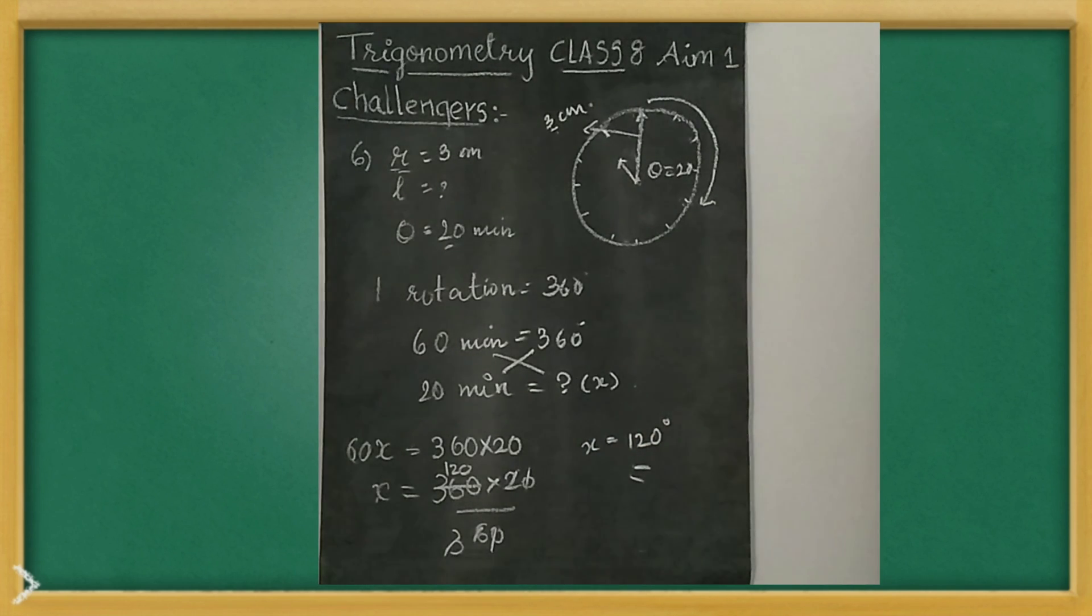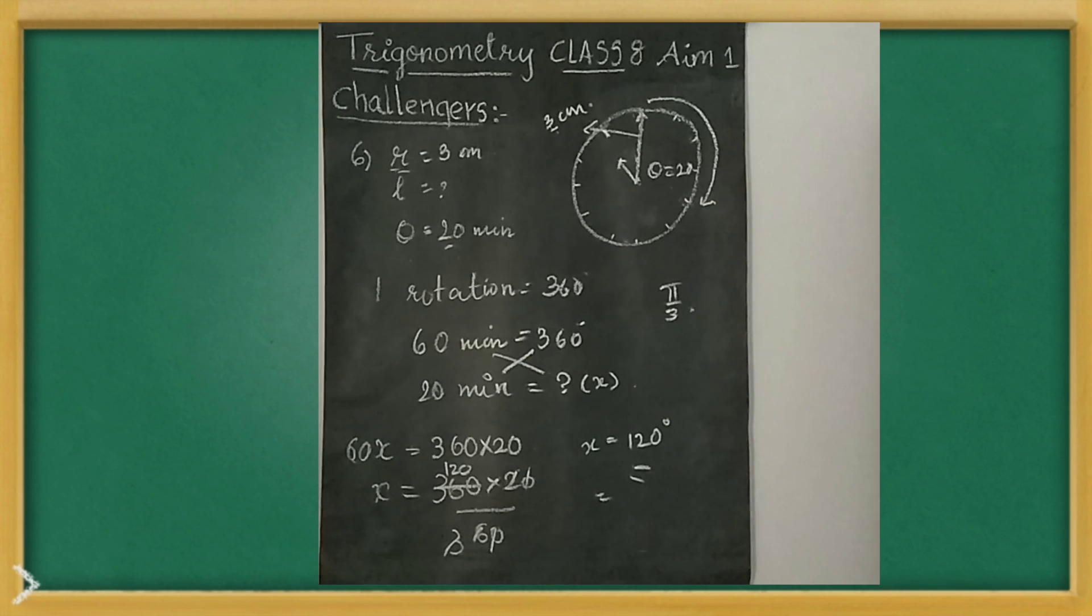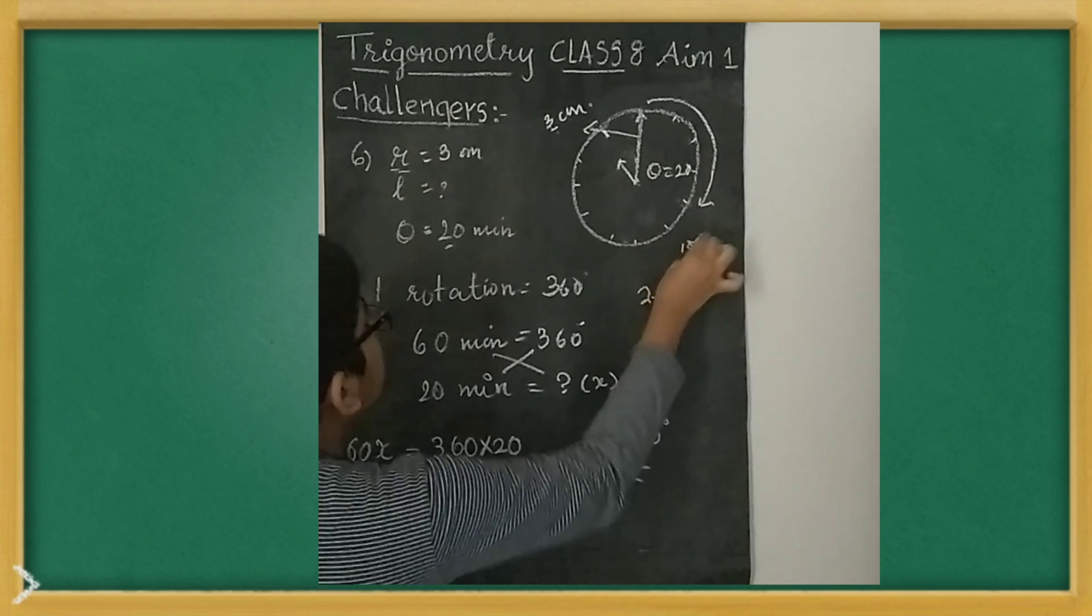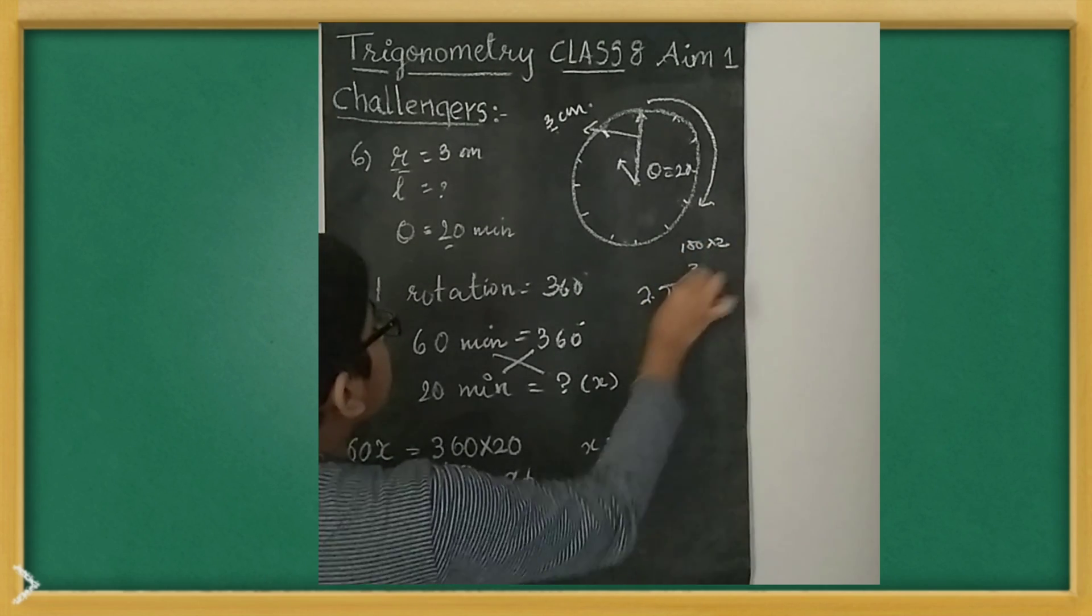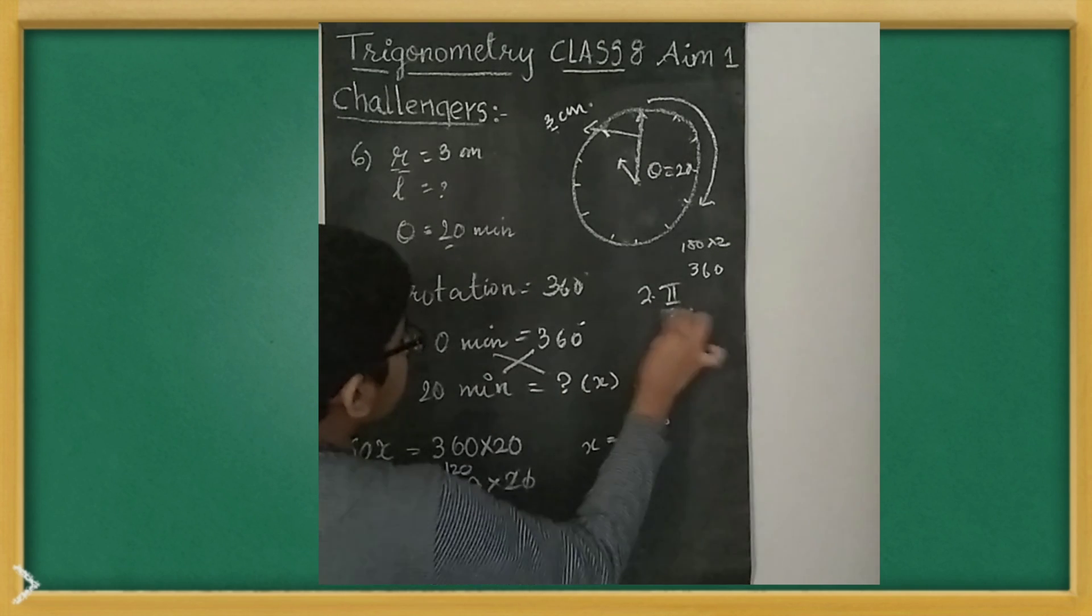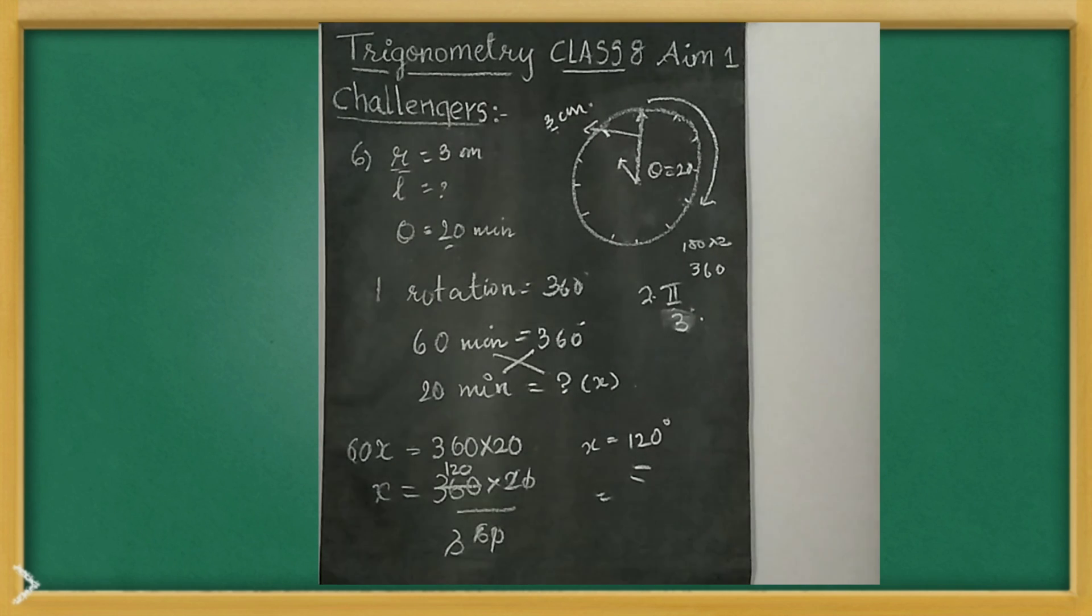And now, how we can write in the form of pi? In terms of pi, we'll once try it. When you do it, first it is 2 into pi. 2π is 180 into 2 is 360. 360 by 3 is 120. So we have to write 2π/3 instead of 120.